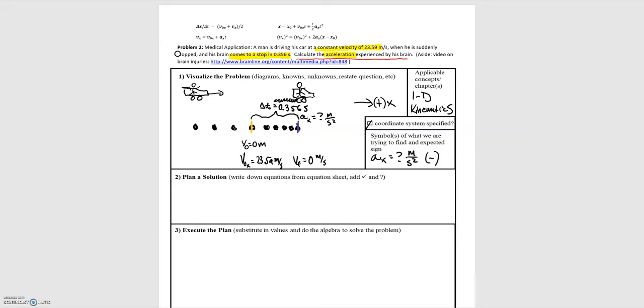Acceleration is a question mark because that's what we are looking for. We're expecting units of meters per second squared. And again, since the velocity is to the right, which is positive, and we're slowing down, we know that we should expect a negative acceleration.